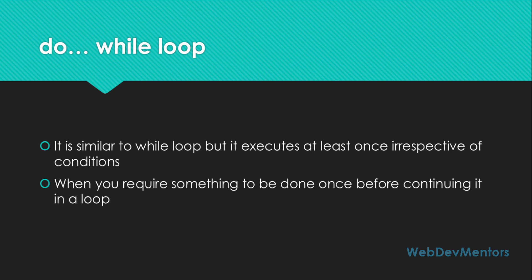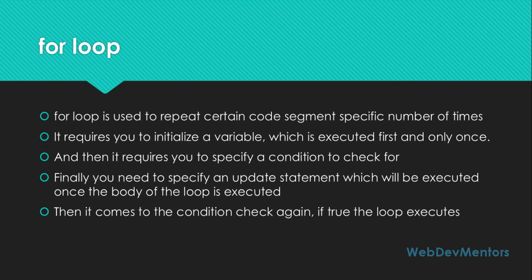The final loop mechanism available in Java is the for loop. The for loop is used to repeat a certain code segment a specific number of times. If you have a segment of code you want to execute exactly 10 times, or 9 times, and you want that to be counted, the for loop is the best choice. It requires you to initialize a variable first, which serves as the counting variable to track how many times the loop has run.